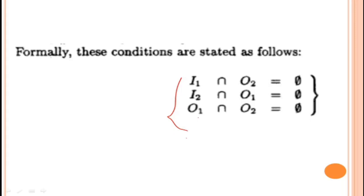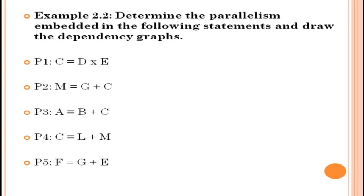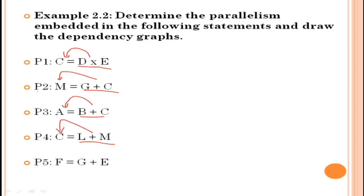Now we will consider an example to determine the parallelism embedded in the following statements and draw the dependency graphs. Process P1 performs multiplication: c = d × e. Process P2 performs addition: m = g + c. Process P3: a = b + c. Process P4: c = l + m. Process P5: f = g + e.